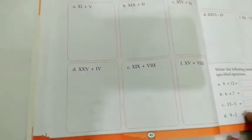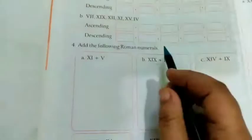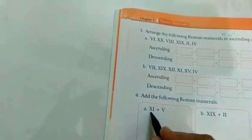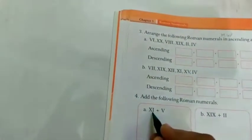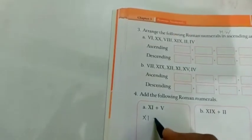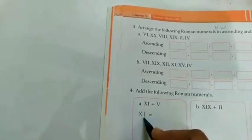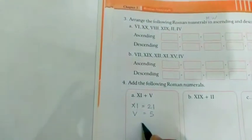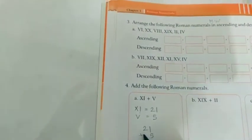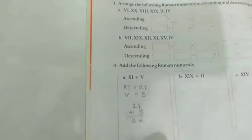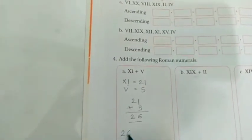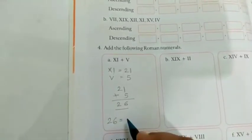Now remove your observation book page number 40. So add the following Roman numerals. So how you are going to add? First of all you have to convert it into Roman numerals. So this is 10 that is 11 and V is 5. So 21 plus 5 that is equal to 26. So this is 26 you have to again convert it into Roman numerals.